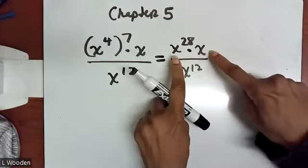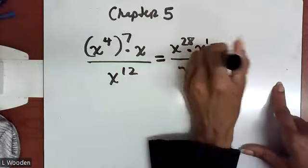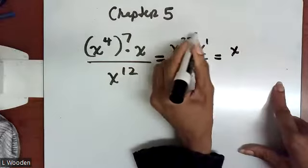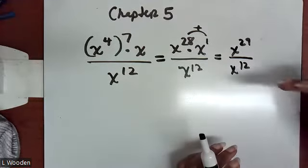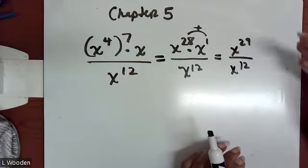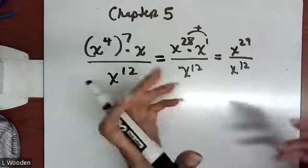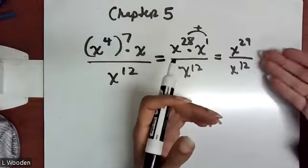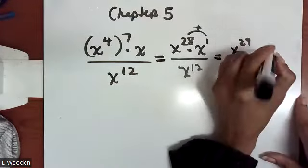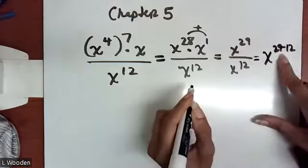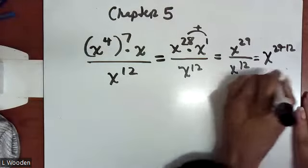The operation between the two x's is multiplication — it's the only operation where you don't have to see a symbol. When we do x²⁸ times x, we use the product rule: we're multiplying like bases, so we keep the x and raise it to 28 plus one. The exponents are added, giving us x to the 29th over x to the 12th. We must keep simplifying — everything must always be in lowest terms. Using the quotient rule, we subtract exponents: 29 minus 12 gives us x to the 17th power.